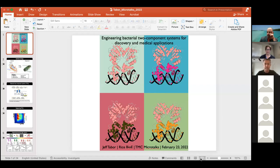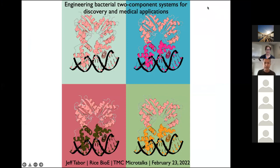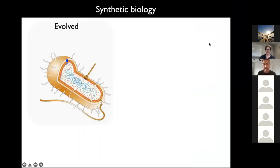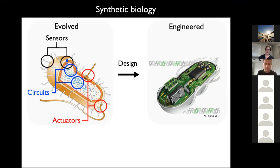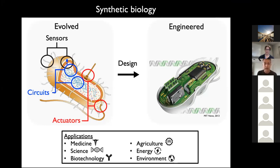My lab studies synthetic biology. We see evolved cells functioning a bit like robots — having sensors that detect information in the environment, genetic circuits that process that information, and then controlling the activity of actuators like enzymes or pathways that allow the cell to change its environment or state. We'd like to build on that foundation to engineer cells into artifacts that carry out new functions in medicine, science, biotechnology, agriculture, and the environment.